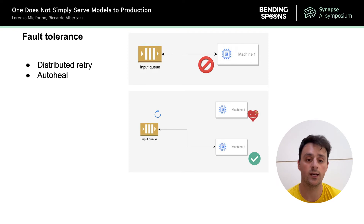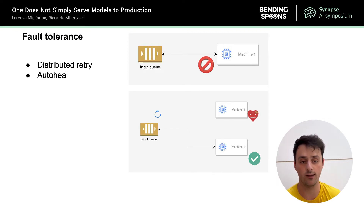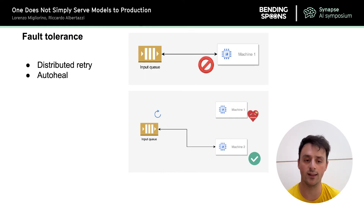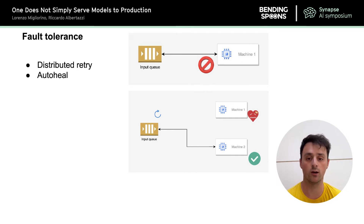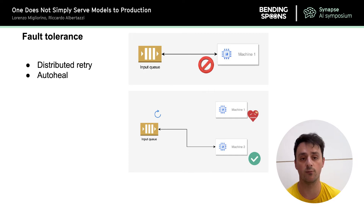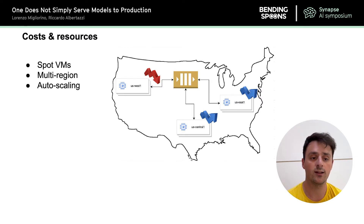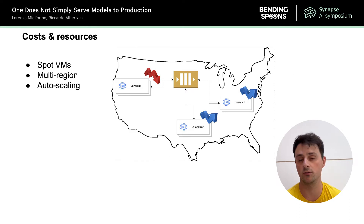Fault tolerance — how do we achieve it? When there's a failure processing a request on one machine — which could happen for any reason such as the machine running out of memory, out of disk, or the code ending up in an undesired state — the request is retried by the message broker on other machines. If a machine is unable to process the request for a certain amount of time, the machine is shut down and replaced by a new one — a process called auto-healing. Regarding cost and resources, we keep costs down by using spot, or preemptible, virtual machines and GPUs. Spot VMs are normal VMs that the cloud provider — Google in this case — gives you at a much lower cost.